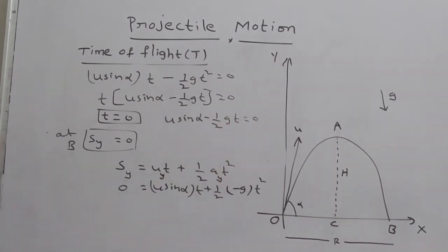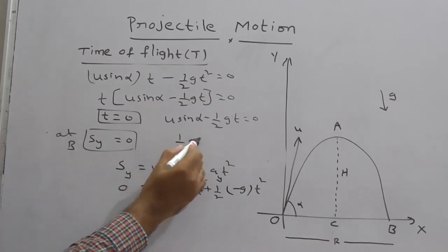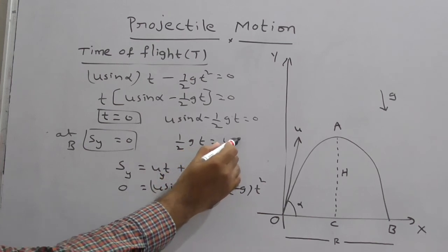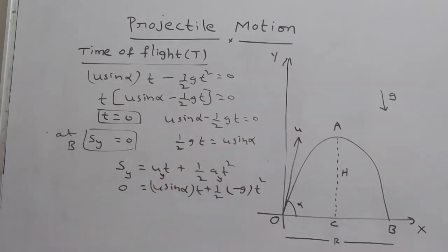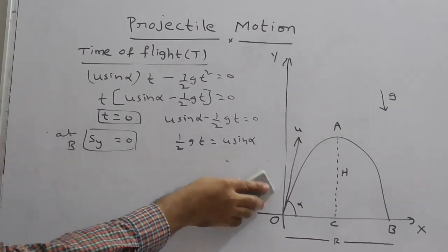If half g t is equal to 0, we have to get t. So therefore, 1 by 2 g t, you can write it as u sin alpha. 1 by 2 g t, you can write it as u sin alpha.